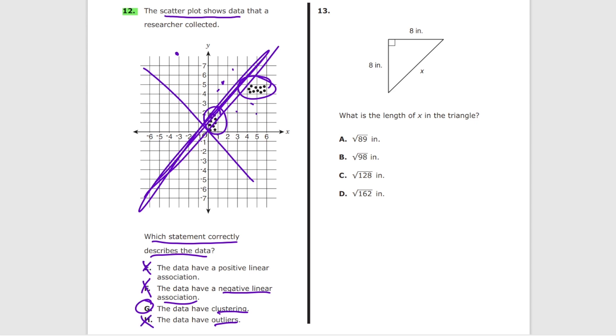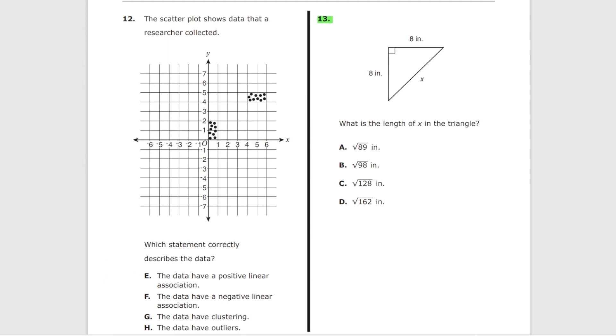Finally, problem 13. What is the length of X in the triangle? We have a right triangle here. X is a hypotenuse. To find X, simply do Pythagorean theorem which is square root of 64 plus 64 which equals square root of 128. The answer is C. Thank goodness they didn't ask us to simplify the square root.